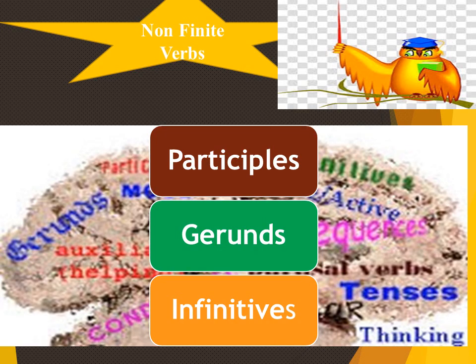Non-finite verbs are divided into three kinds: participles, gerunds and infinitives. Participles, as I told you earlier, have already been covered in the previous lecture. Gerunds has been touched upon, but this presentation is going to discuss gerunds and infinitives in a more detailed way.